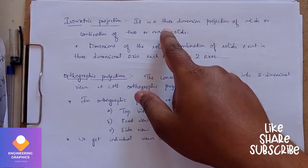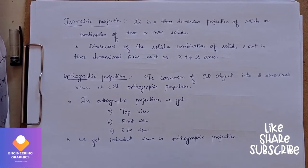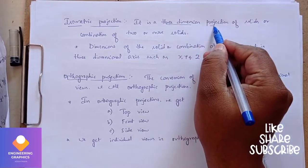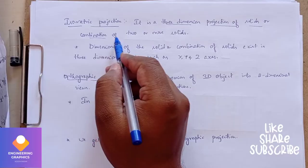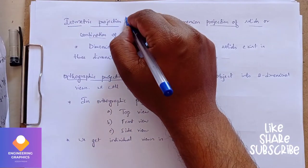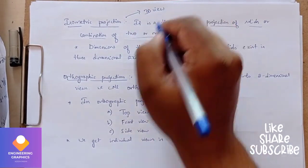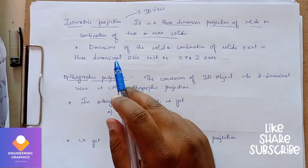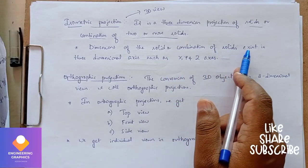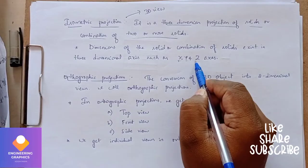Isometric projection is nothing but three-dimensional projection of solids or combination of two or more solids. From this we get a three-dimensional view here. Either it can be a single solid or it can be combination of solids, so isometric means we're getting 3D view. The dimensions of these solids or combination of solids exist in three-dimensional axis, that is x,